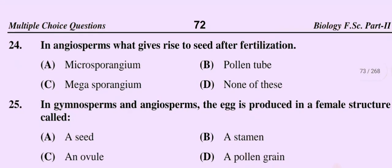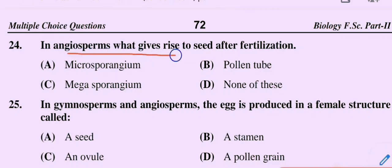Question number 24. In angiosperms, what gives rise to a seed after fertilization? Option A: Microspore. Option B: Pollen tube. Option C: Megaspore. Option D: None of these.